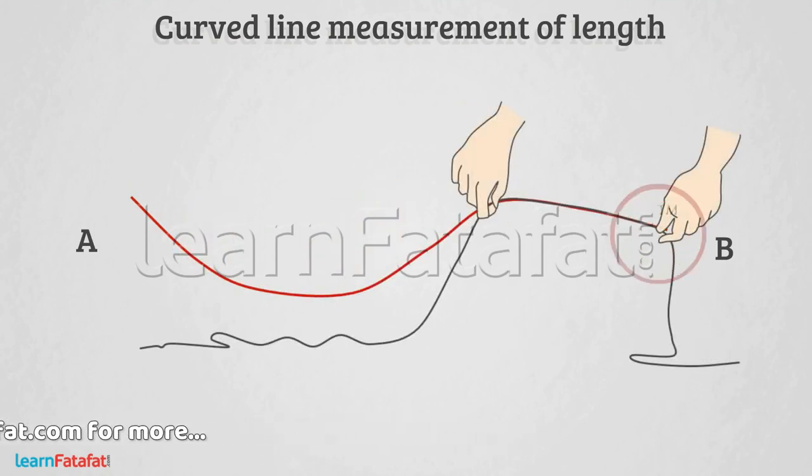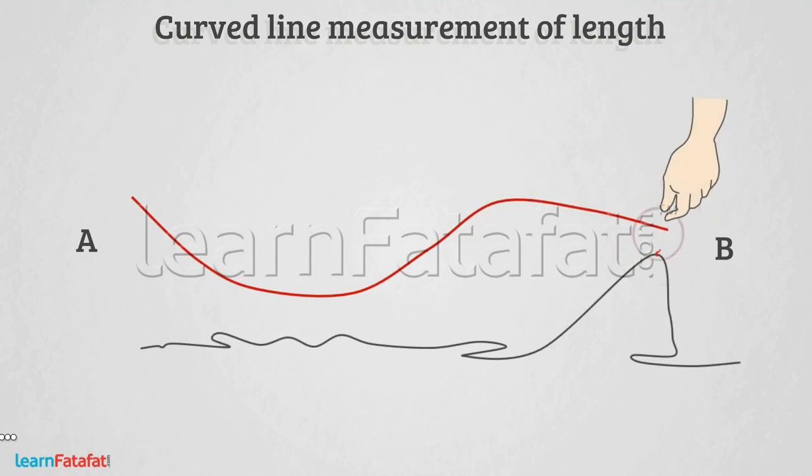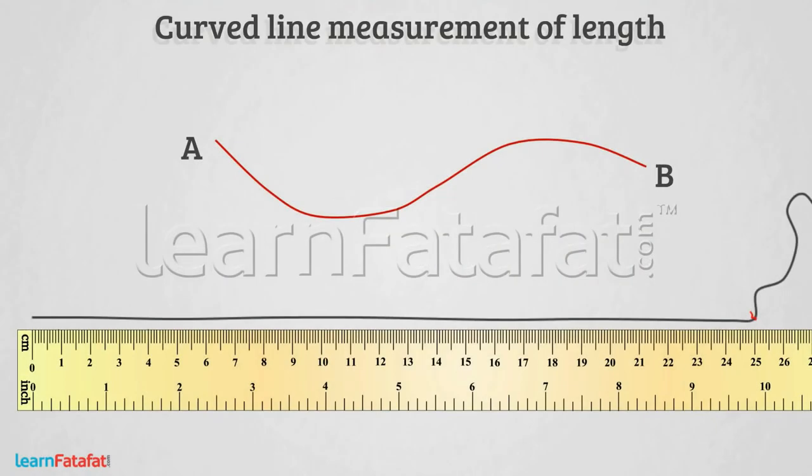Make a mark on the thread which marks the end of the wire. Now measure the length of the thread using the meter scale. The reading here is 25 cm. This is how you can measure the length correctly.